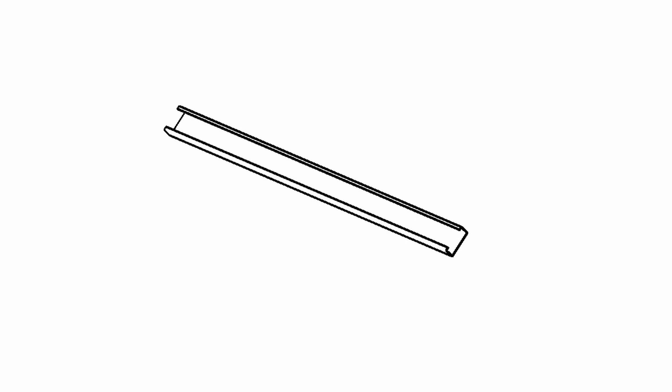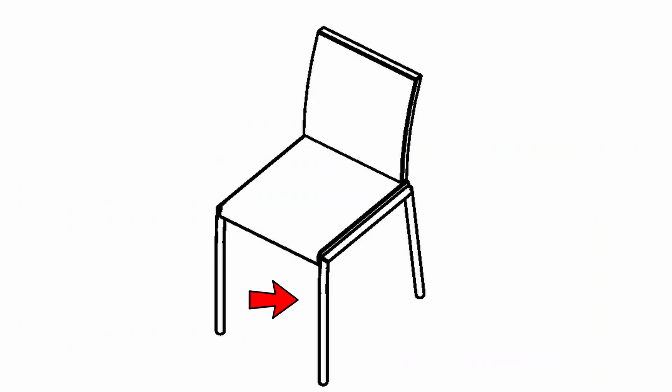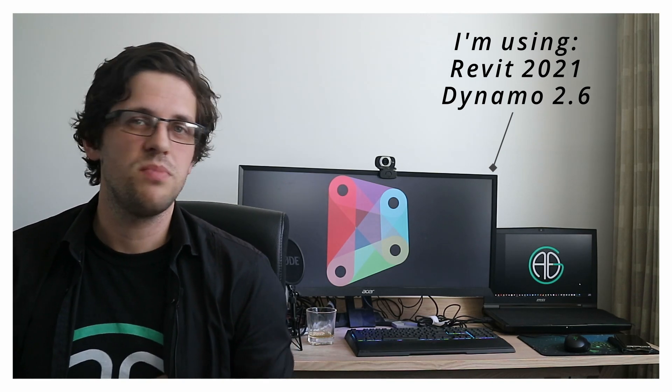We're going to be using Dynamo, but we need to think about what the location of an element really is. Is it the middle, is it the bottom — say a beam, for example — the center or the end? Some things are easy, like a chair which has a point, but walls might have a curve. In this case, we're going to assume everything is represented by its absolute center. I'm using Revit 2021 with Dynamo 2.6 and my custom package Crumple to obtain element centroids, though a similar node exists in Clockwork as well.